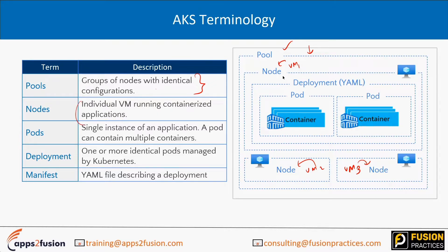Within a pool you have nodes — these are individual VMs running containerized applications. Inside these VMs you have a single instance of an application. A pod can contain multiple containers. A pod is nothing but an instance of an application. You might be running App1 here, App2 here, or you might be running App1 across multiple pods — that is also possible.